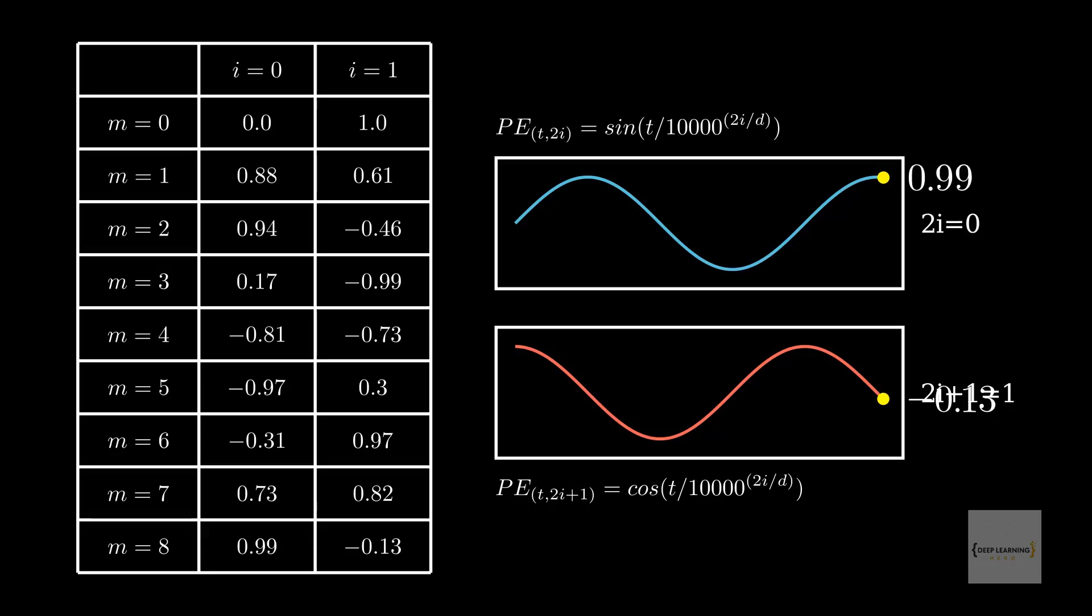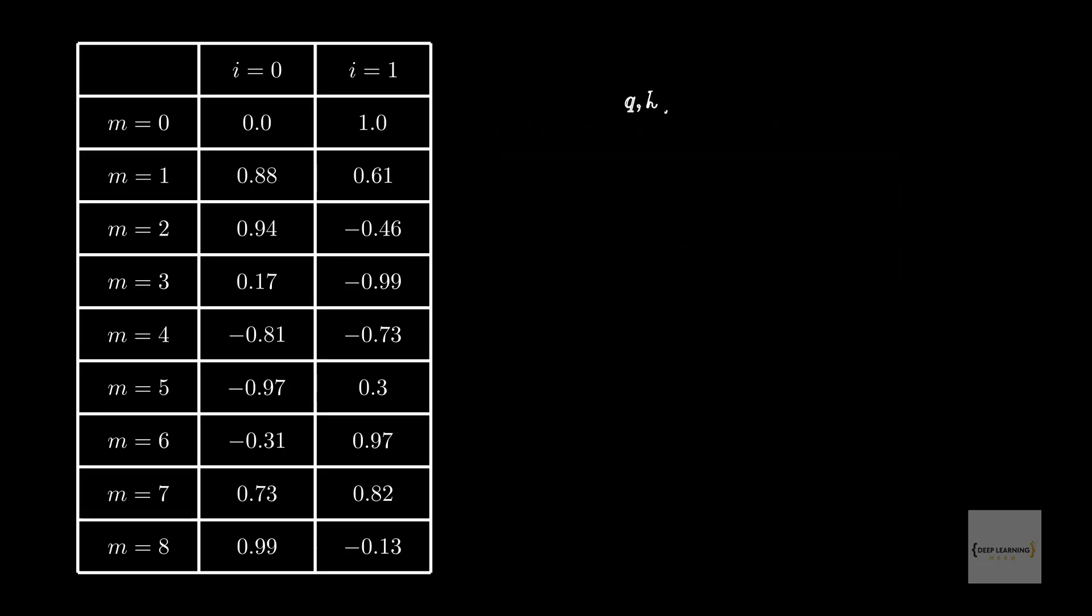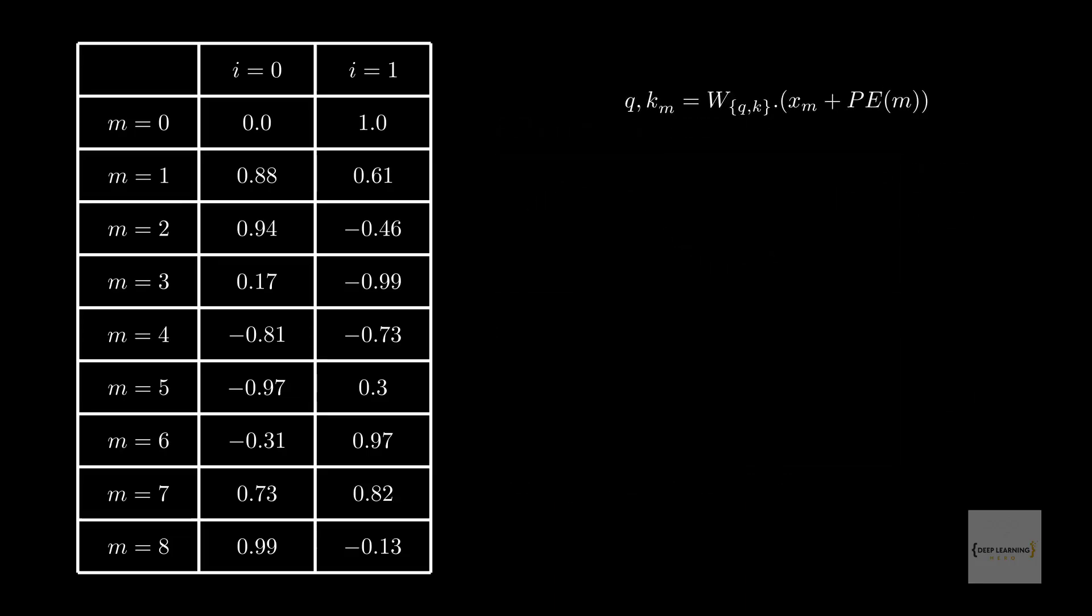Once the position embeddings are computed, they are added to x. So, let's see how this affects an example vector. For simplicity, let's pick 1, 1.